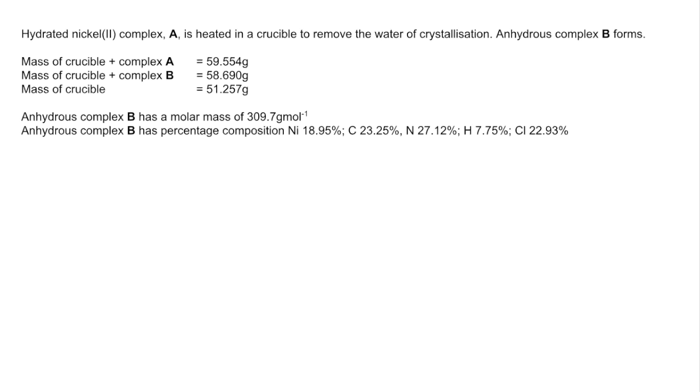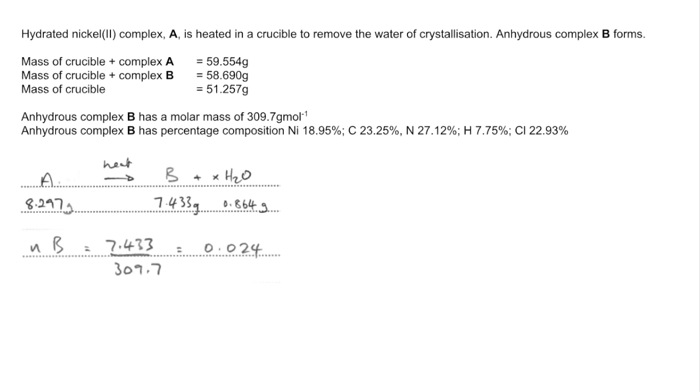I'm going to start with that information there, so all of that mass data from the crucibles. I'm turning it into an equation so A was heated to make B and some water, so all the water of crystallization is driven off. It comes out that 8.297 grams of A was heated and we got 7.433 grams of B and 0.864 grams of water. Because we know the MR of B and water we can work out the moles. The moles of B, mass over MR, 0.024 moles of water, mass over MR, 0.048. You can see there's a 1 to 2 ratio between B and water, so that's telling us that the hydrated salt A has got 2 moles of water of crystallization.